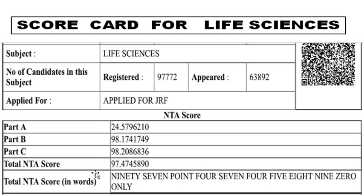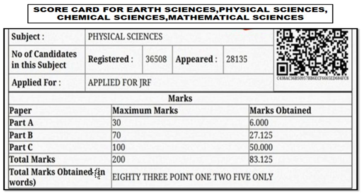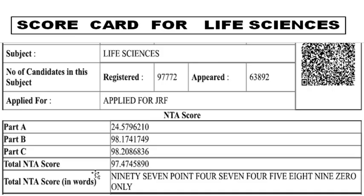The next important information you should know is that NTA will not be releasing the raw marks anywhere. For other sciences, they will release how many marks a student got out of 200, whereas for life sciences, your raw marks — how many marks you got out of 200 — will not be revealed at all. This basic information you should definitely know, and you should also know about the normalization procedure. So these are the details given in the scorecard for life sciences. Thank you friends, thanks for watching this video.